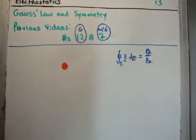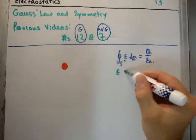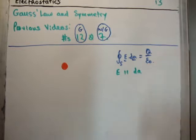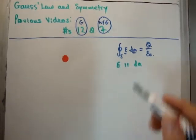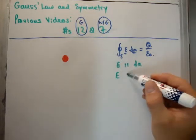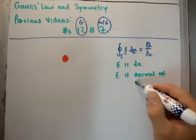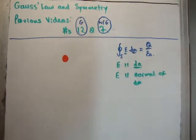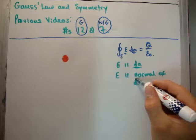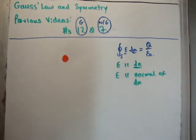The only way to simplify the integral is if E is parallel, the electric field is parallel to the infinitesimal area element. But I said in a previous video that it has to be parallel to the normal of dA, so the vector dA. The electric field has to be parallel to the normal of dA. So if you'd like to know more about normals, look at my videos on vector calculus for electromagnetism.